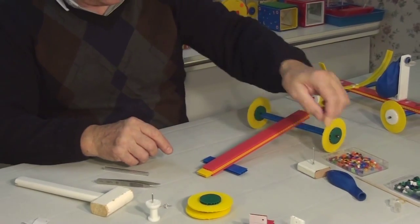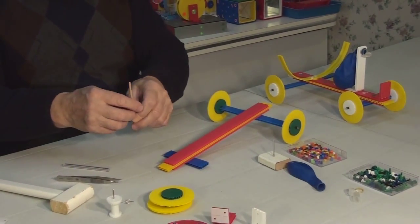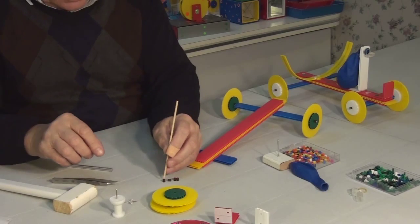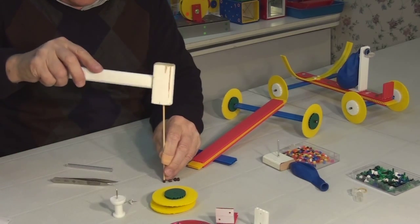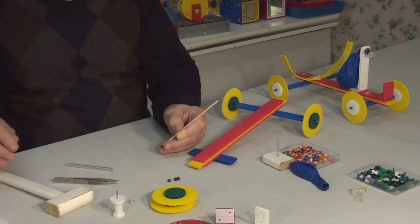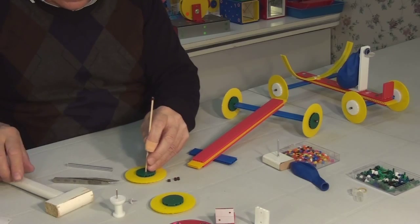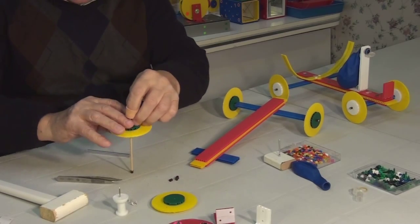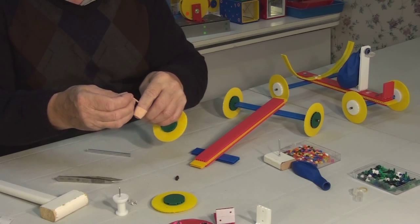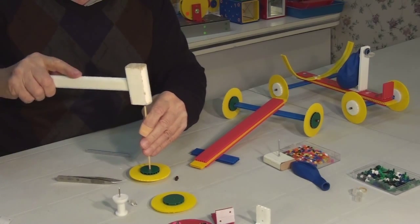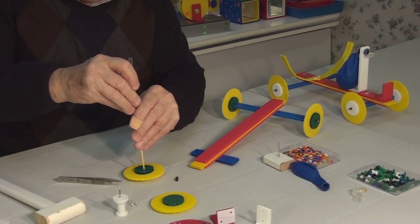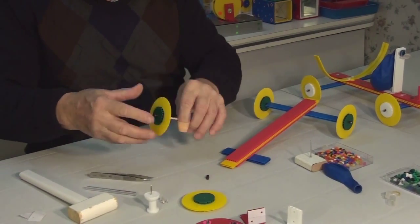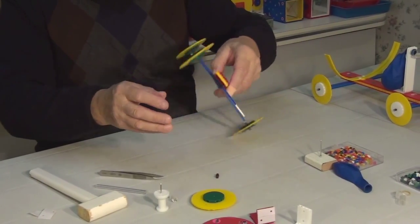Next we will repeat the same steps with the other set of wheels. We will take the smaller axle and four beads. First we will put the bead, then the wheel, and lastly the bead again. Check if the wheel is straight.